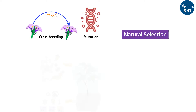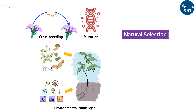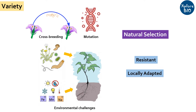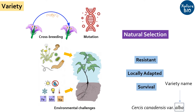Picture this: a crop species evolving over time, shaped by natural forces like crossbreeding, mutation, and rigorous environmental challenges. These are the varieties, locally honed to perfection, boasting heightened resistance, unparalleled adaptability, and thus higher survival rate. Variety name is written in lowercase and italicized, and should always be preceded by the abbreviation VAR.